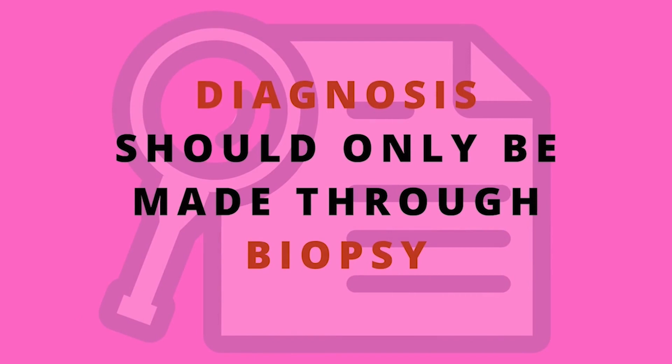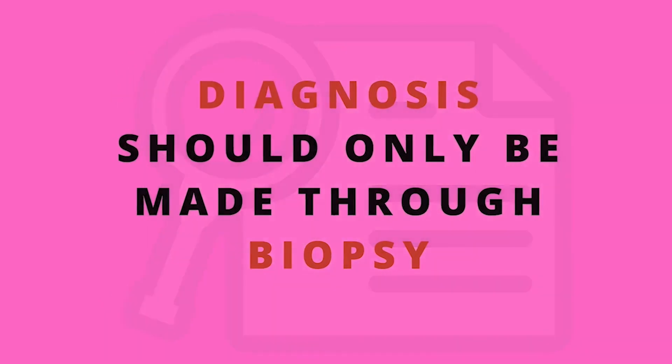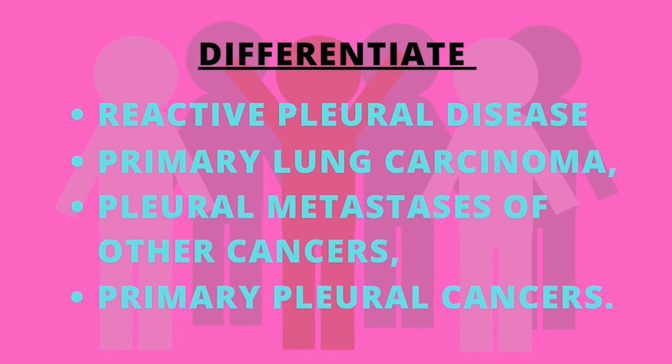Diagnosis of mesothelioma can be suspected with imaging but is confirmed with biopsy. It must be clinically and histologically differentiated from other pleural and pulmonary malignancies, including reactive pleural disease, primary lung carcinoma, pleural metastasis of other cancers, and other primary pleural cancers.